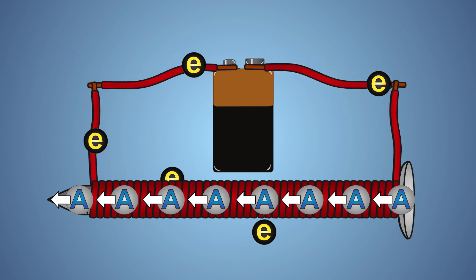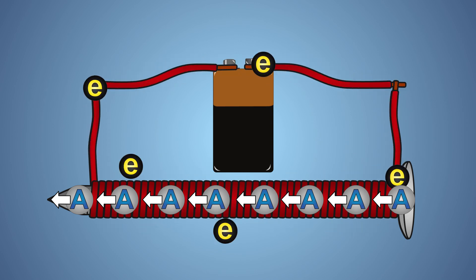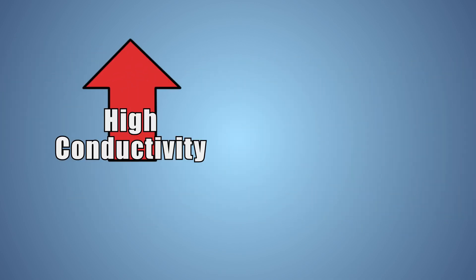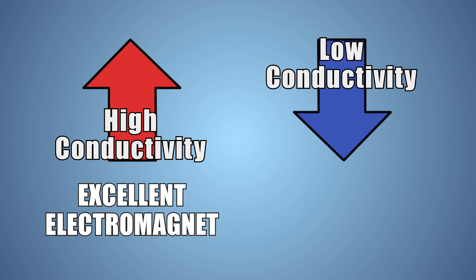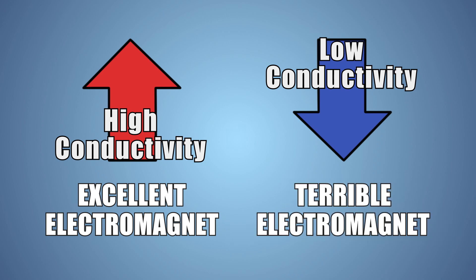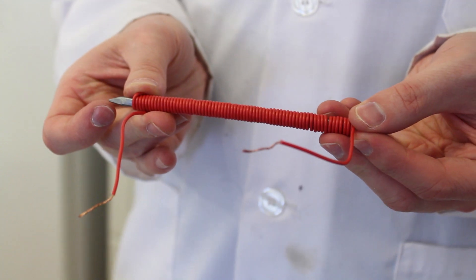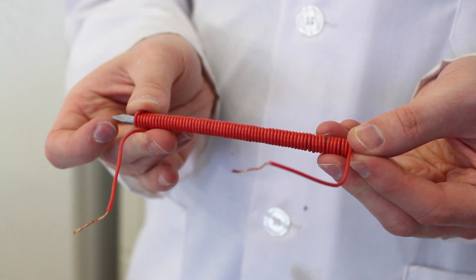Several factors affect the strength of an electromagnet. The type of metal used has a huge impact on how strong of a magnet is created. Metals which are good electrical conductors, like iron and cobalt, make excellent electromagnets. A poor conductor, like aluminum, makes for terrible electromagnets. The number of loops around your nail and the amount of current traveling through your coiled wire also affect the strength of a magnet. The more coils that will fit around our nail, the stronger the magnet will be.